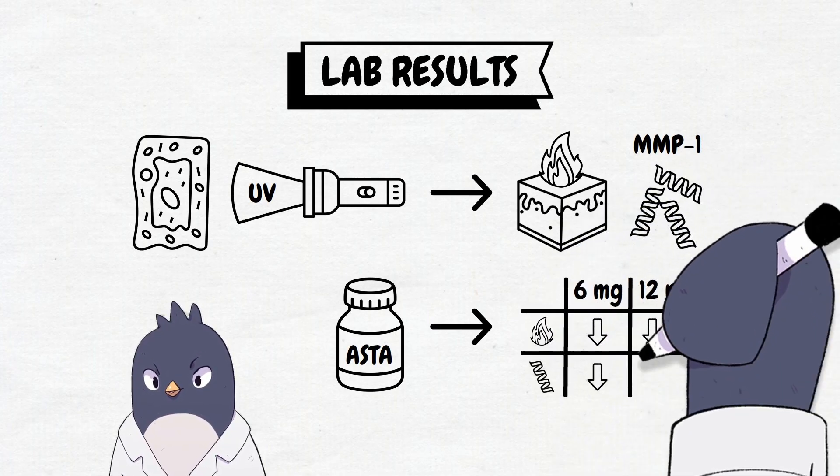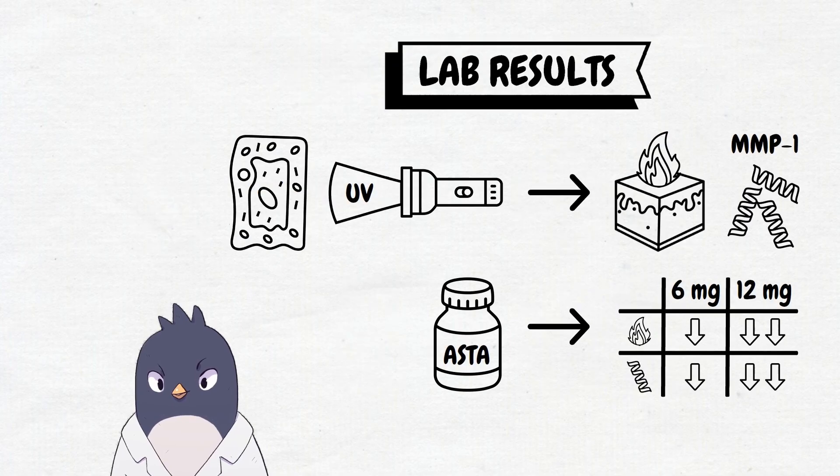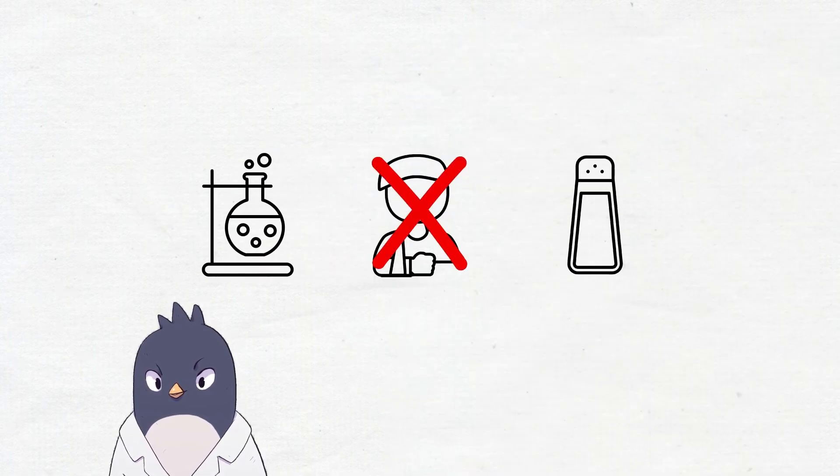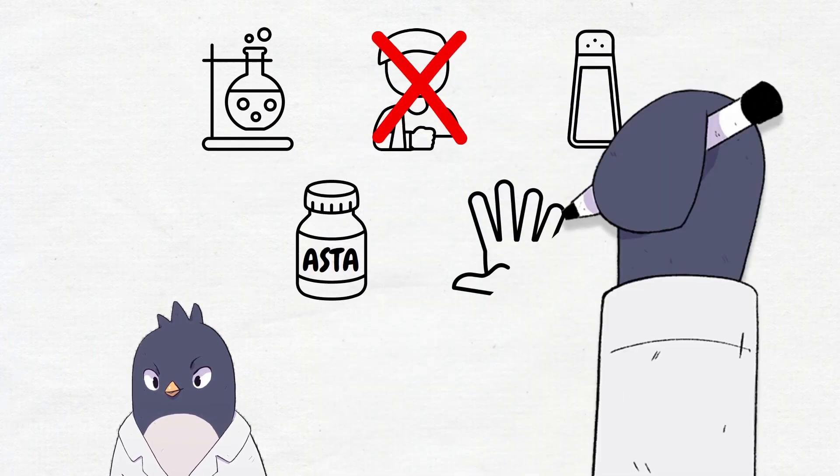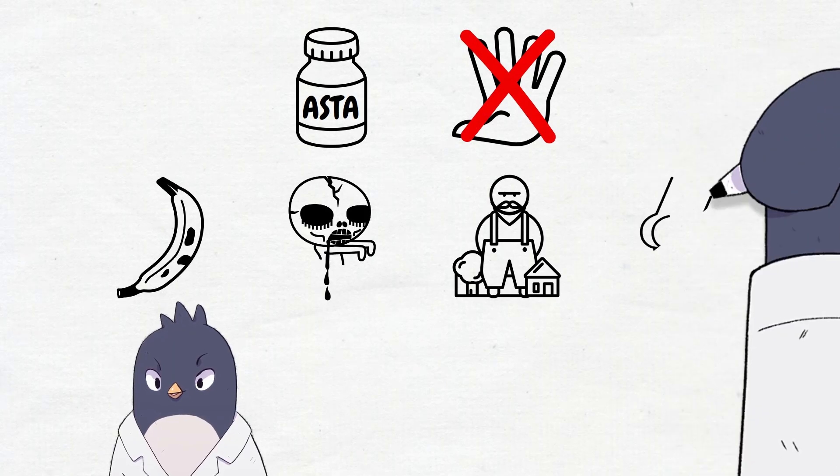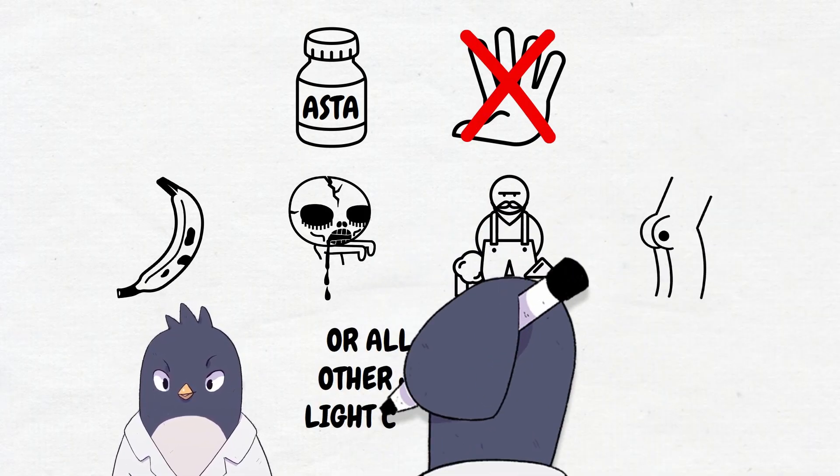This is lab data, not really patient-centered data, so take it with a grain of salt. It doesn't mean astaxanthin will prevent UV light from increasing age spots, DNA damage, abnormal cell growth, skin cancer, or all of the other junk UV light can cause.